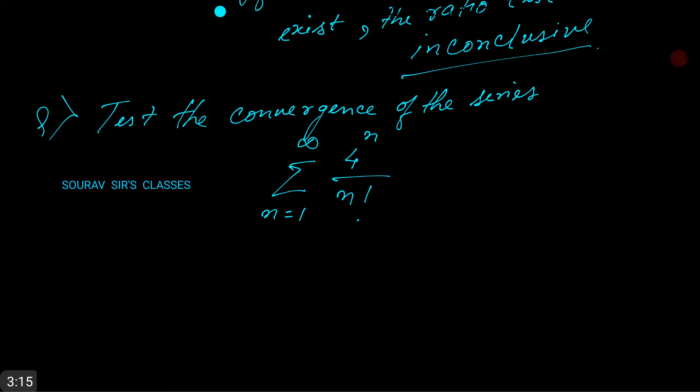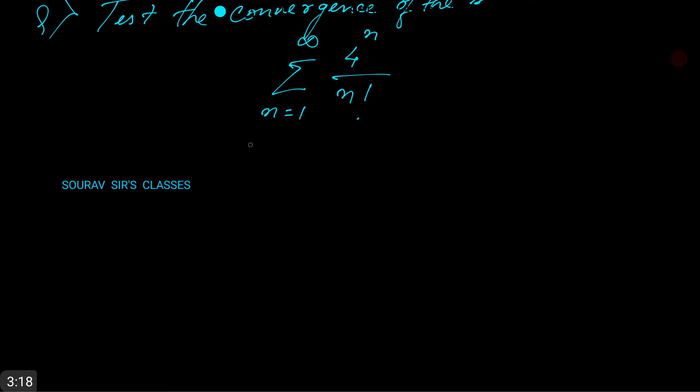Now first we compute L. So the answer begins with L equals limit n tends to infinity a_(n+1) by a_n, which equals limit n tends to infinity 4 to the power n plus 1 by 4 to the power n, times n factorial by n plus 1 factorial.